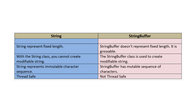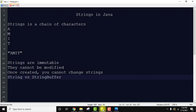String vs StringBuffer: String is for fixed-length — actually it is not fixed length, it is growable — but you cannot create modifiable strings with the String class because it cannot be modified. The opposite goes for StringBuffer. String is an immutable character sequence — once created you cannot edit it — but with StringBuffer you can edit it. String is thread-safe, StringBuffer is non-thread-safe. These are the key differences.